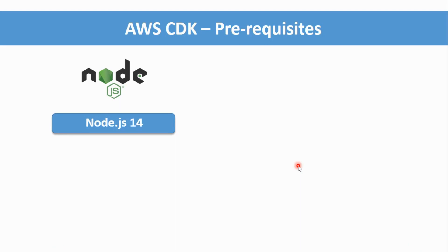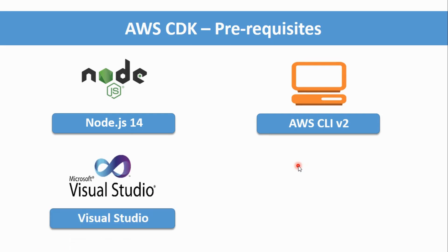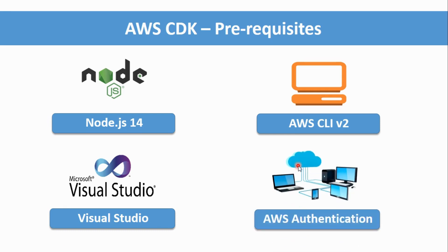To set up a CDK project on your local machine, you need Node.js version 14 or higher, the latest AWS CLI to configure your IAM user for authentication, and a code editor such as Visual Studio Code, PyCharm, or WebStorm. I am using Visual Studio Code. You also authenticate to your AWS account using an IAM user via the AWS CLI.